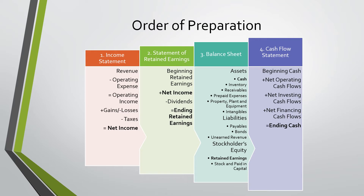We then go to the balance sheet, where assets equal liabilities plus owner's equity. We add all of those up into the subcategories of assets, liabilities, and stockholders' equity.